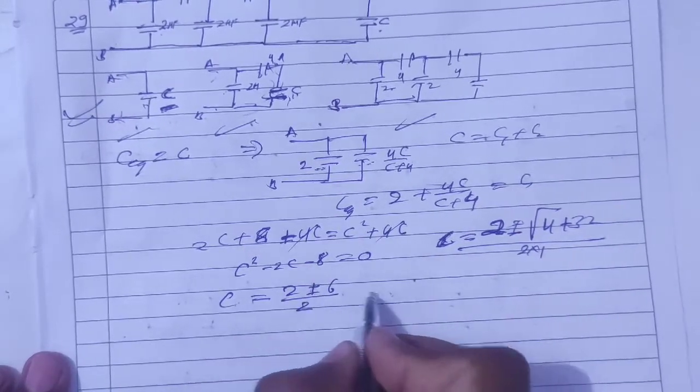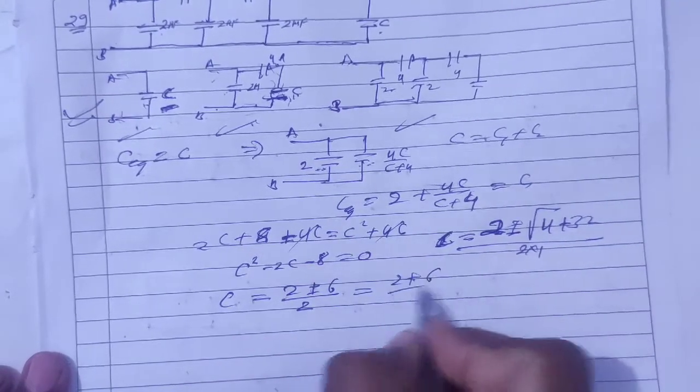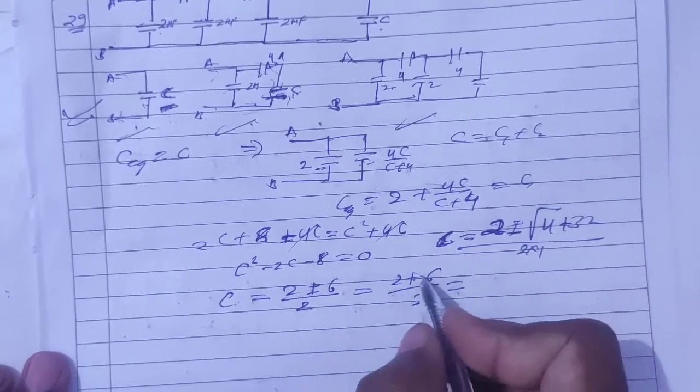We'll take the minus sign out and use only plus because capacitance is not negative. So this becomes 8 by 2, which is 4.